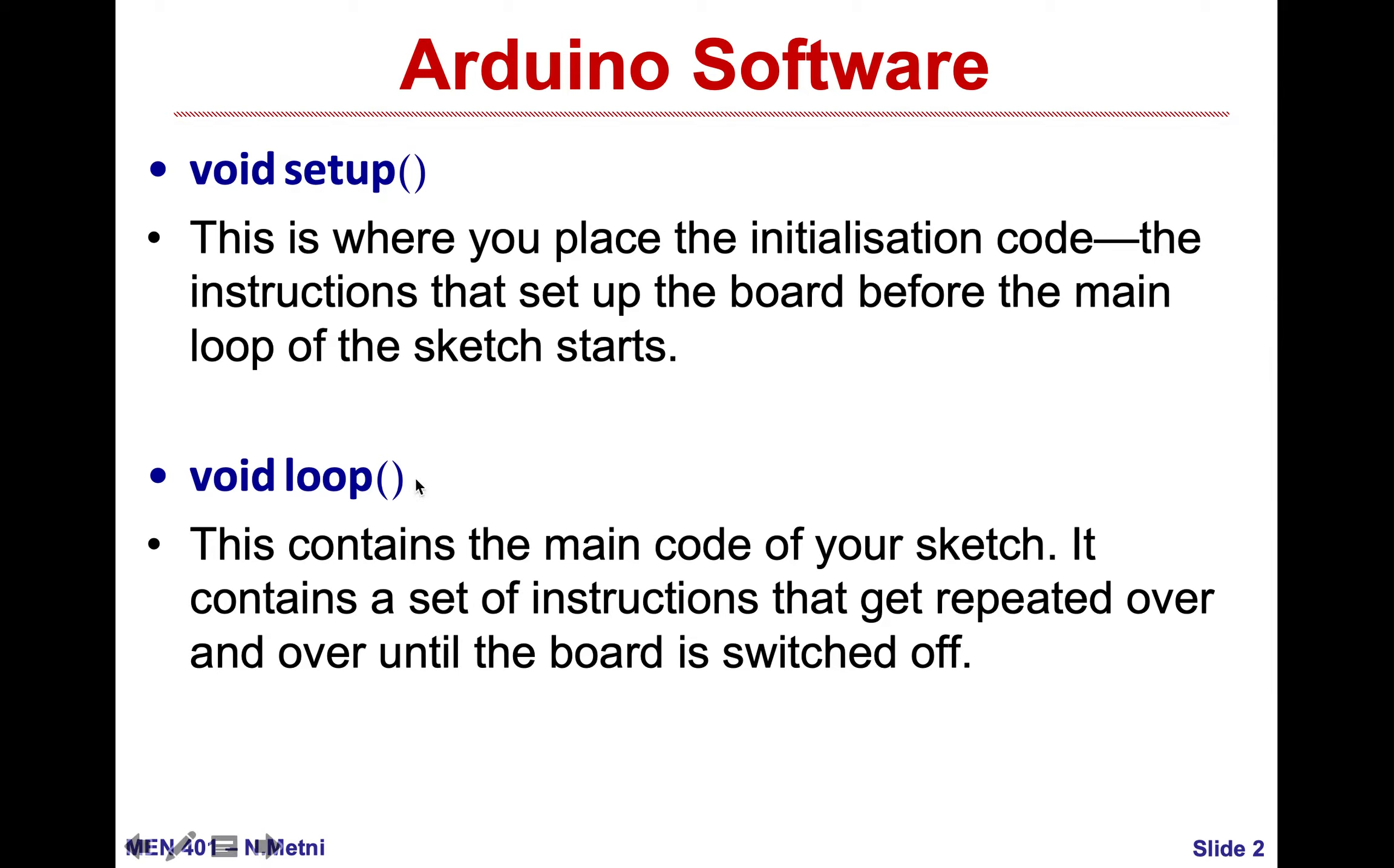Then we go into the second function which is the loop function. This is where your main code will be nested and this will be continuously run. If your code is five lines, when you arrive to the fifth line you jump to the first line and it will continue until the power is off or until reset.